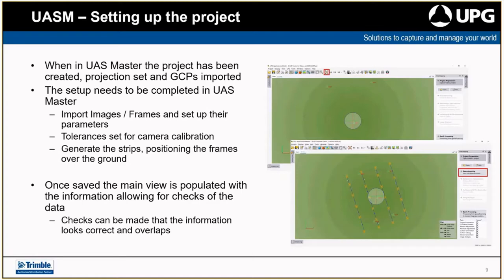You also enter how high the flight was — this information can be gathered from the photos themselves, but it's good to enter it so UAS Master has that specific starting point. There are also tolerances you can set depending on the type of camera. A Mavic 2 would be a low-end camera so you'd want a little more tolerance; a Phantom 4 is better so you wouldn't need as much; and high-end drone capture devices like EBS wouldn't need tolerance changes — the default setting is fairly sufficient.